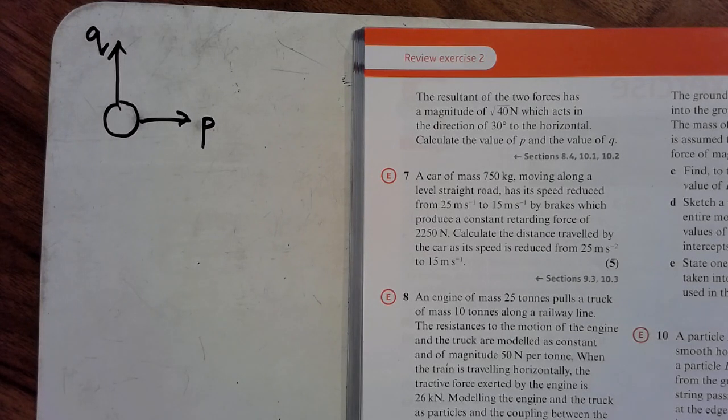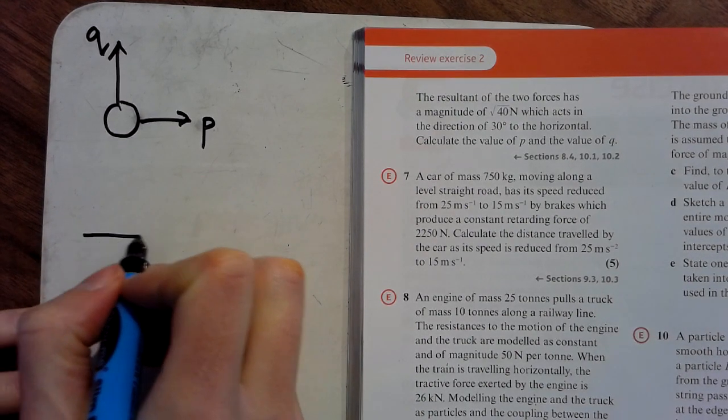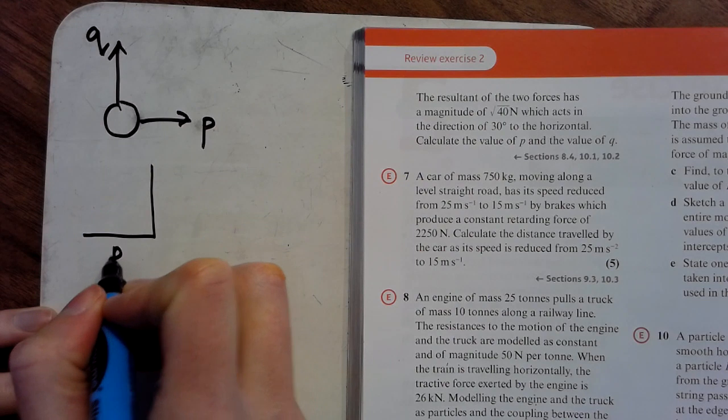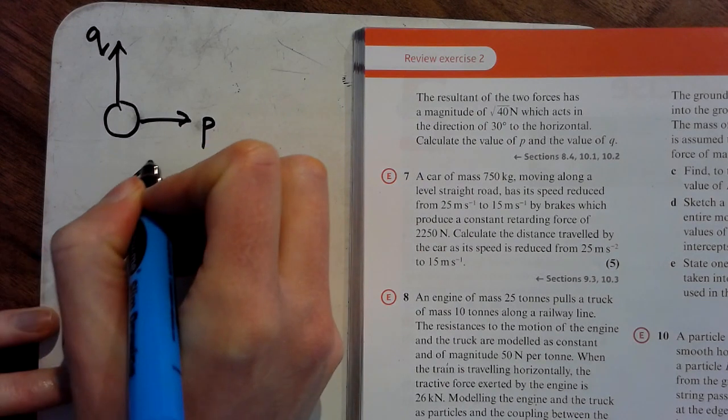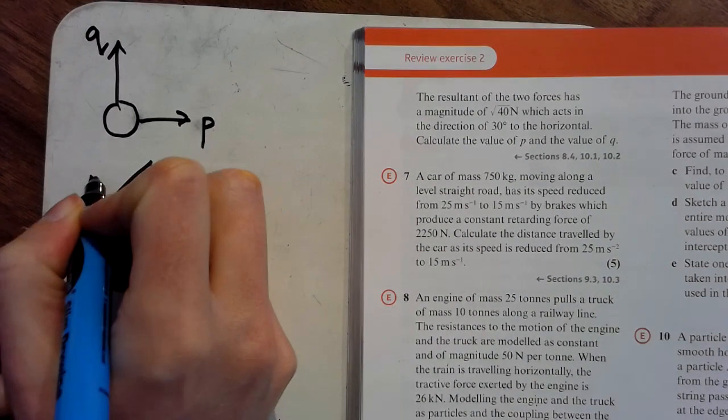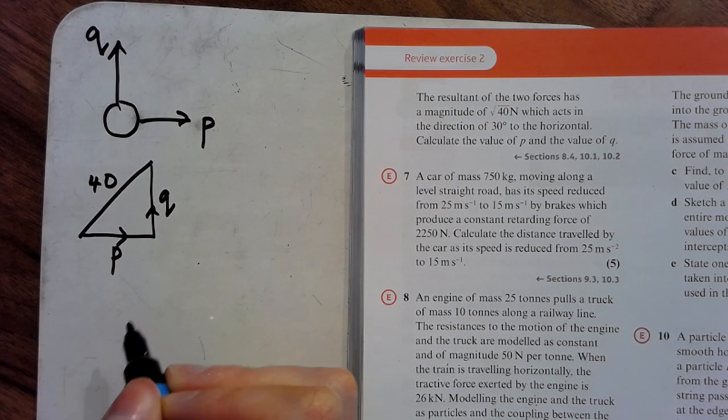So the first of them is that the magnitude is root 40. So that means if I go P along and Q up, the magnitude or the length is 40. So that's a Pythagoras thing.